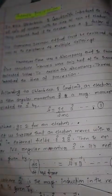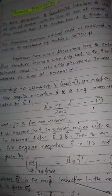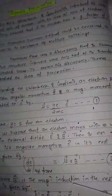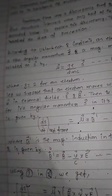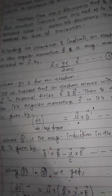Suppose the electron moves with velocity V in an external electric field E and magnetic field B. Then the equation of motion for its spin angular momentum S in the rest frame is given by dS/dt (rest frame) = μ × B', where B' is the magnetic induction in the rest frame, given by B' = B − (V/c) × E. (Equation 3)